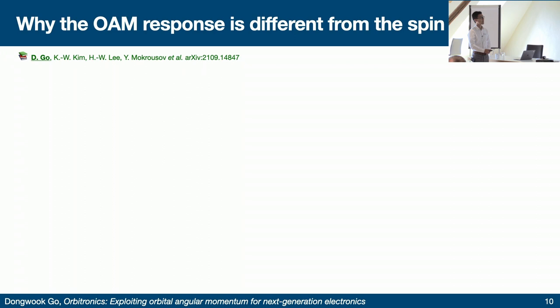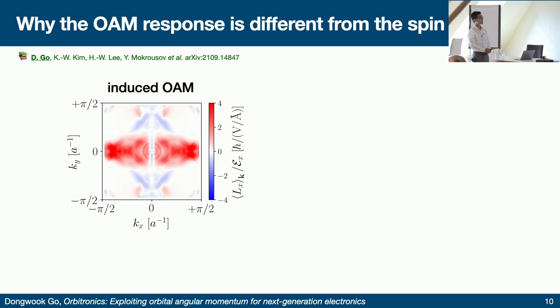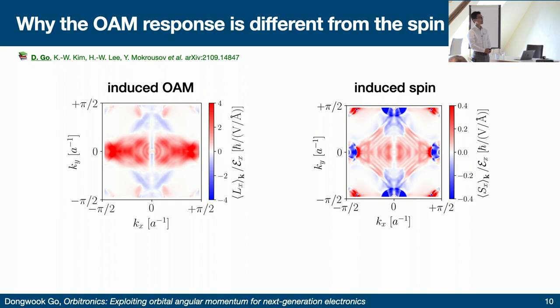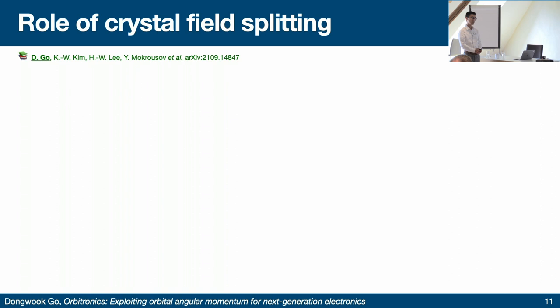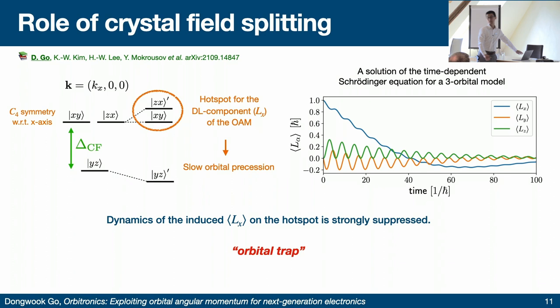To understand why orbital response behaves entirely differently from spin response, I calculated orbital and spin responses for every k-point. The k-space map shows that for spin momentum the distribution is quite homogeneous and responses can be found at many k-points. But for orbital, there is a very strong signal concentrated along the k-axis. The distribution is clearly different. What is so special about the k-axis? To understand this, we need to look at the energy levels at that k-axis point and the orbital structures. The orbital energy levels are responsible for this very strong, peculiar response — there is a degeneracy, and when there is a degeneracy the lifetime of the orbital excitation can be very, very long.